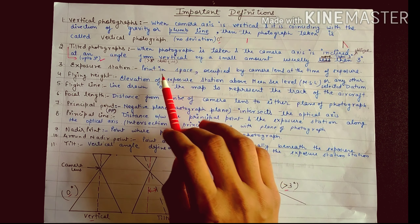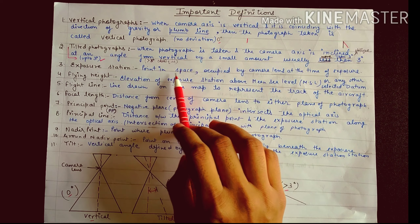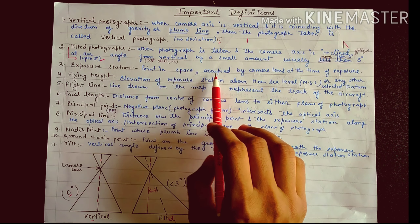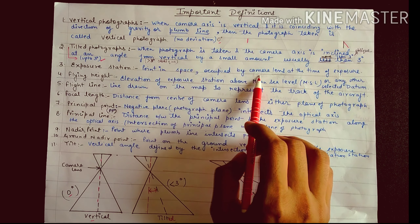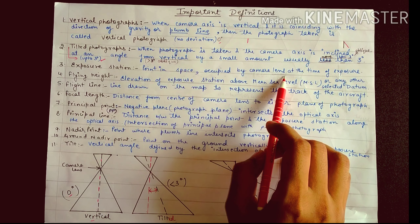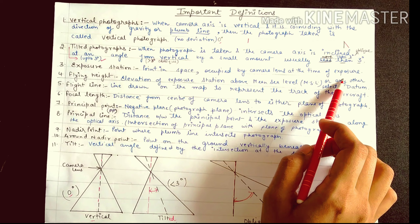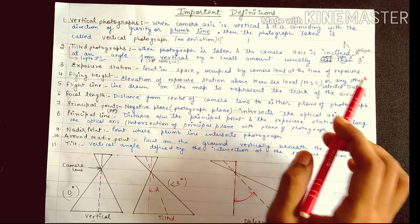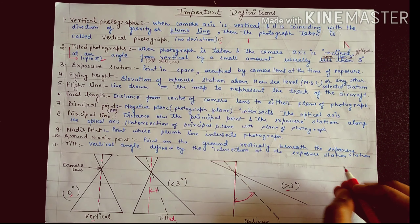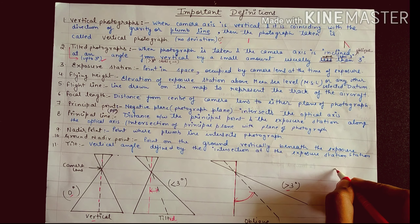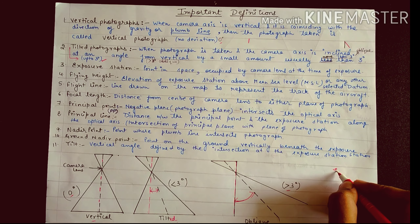Next is exposure station: the point in space occupied by the camera lens at the time of exposure — that is, the point of the lens from where the photography is being taken.